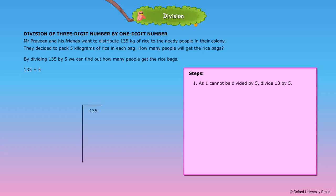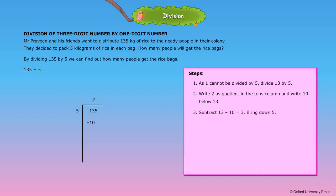Steps: As 1 cannot be divided by 5, divide 13 by 5. Step 2: Write 2 as quotient in the tens column and write 10 below 13. Step 3: Subtract — 13 minus 10 is equal to 3. Bring down 5.